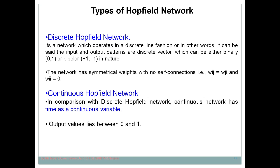The discrete Hopfield network has symmetrical weights with no self-connections, inheriting these features from the original Hopfield network. The value of wij equals wji, where wij represents the weight from neuron i to neuron j, which is the same as the weight from neuron j to neuron i. Also, wii equals zero and wjj equals zero because there are no self-connections — the weight from a neuron to itself is zero.